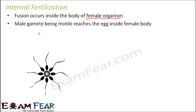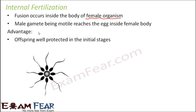Since the male gamete has to travel inside the female body, the chances of it getting lost are quite high, so a large number of male gametes are produced. The female gametes, being non-motile, do not move and therefore fewer female gametes are produced. The advantage of internal fertilization is that the offspring remains well protected in the initial stages, as the zygote is kept inside the female body for quite some time.